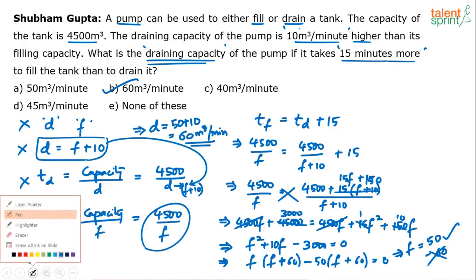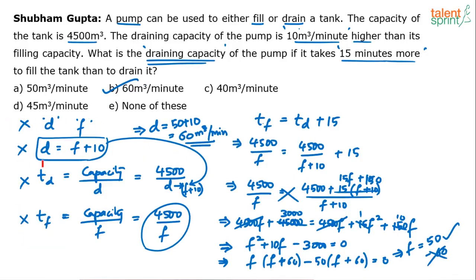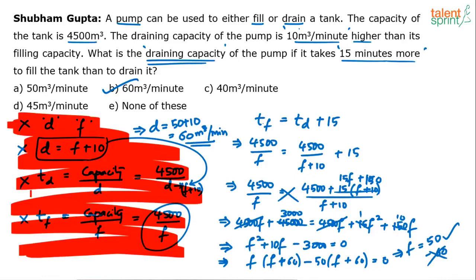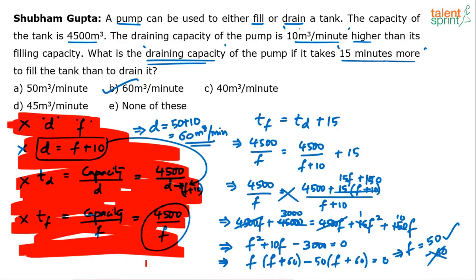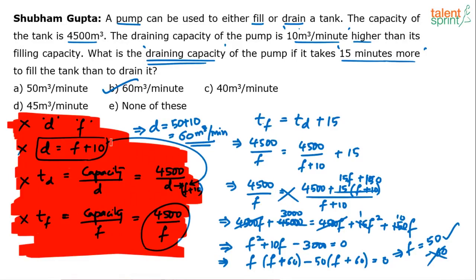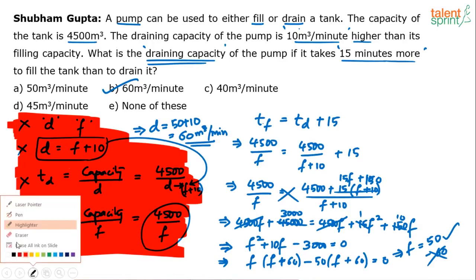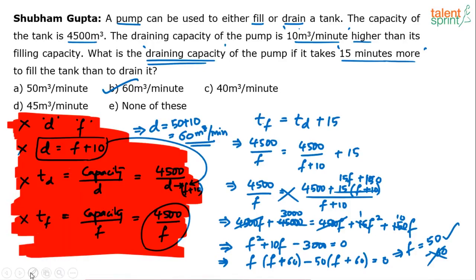Please do not go by the length of the explanation. What's on the left-hand side here is just the basic points given in the question itself — you don't have to write all these steps. The main things to write are the key equation and the quadratic. Filling capacity comes out to be 50, draining capacity is 60, and option B is the answer. If you want to avoid this whole algebraic approach, you can go by options directly.